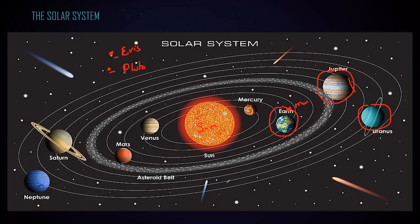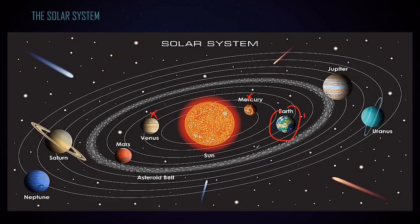Different planets have different numbers of moons. Mercury does not have any moon — there is no orbiting stellar object around Mercury. Venus also has no moon. Earth has one moon — one natural satellite moving around the Earth.